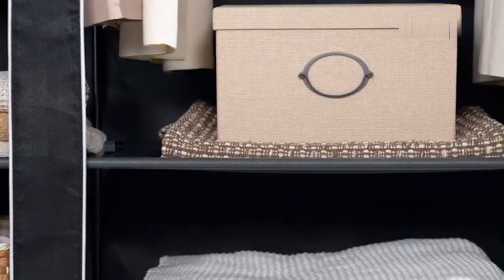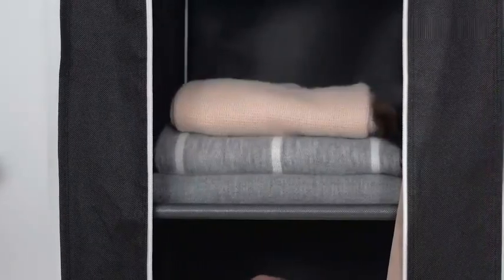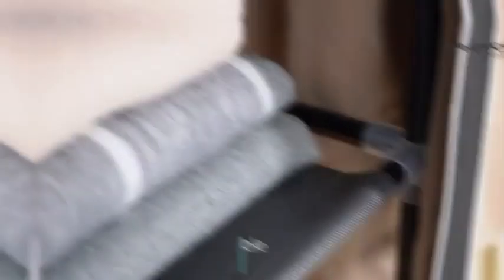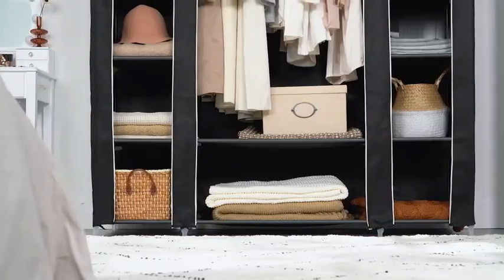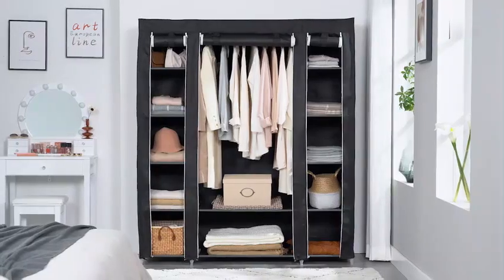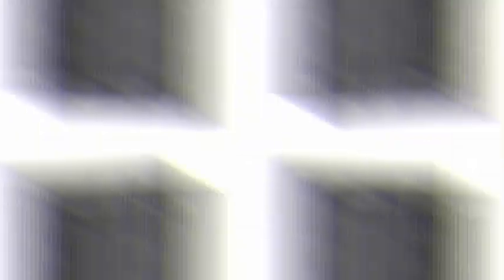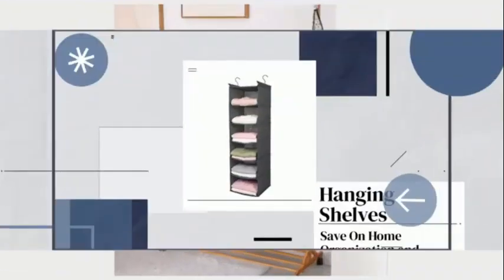With product dimensions of 59 inches, 17.75 inches, 68.88 inches, and an item weight of 11.66 pounds, the Song Mix Closet Wardrobe provides ample storage space while remaining easy to move around as needed.